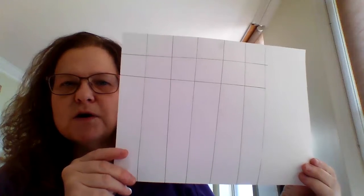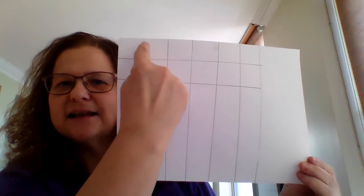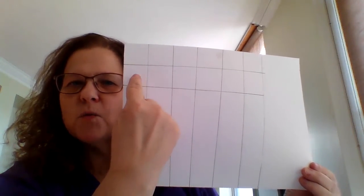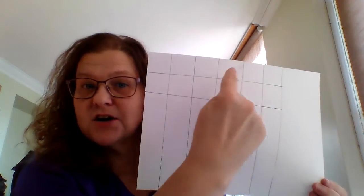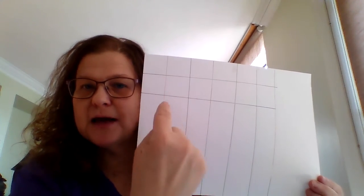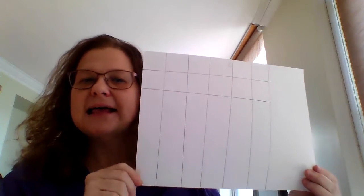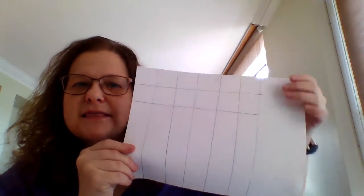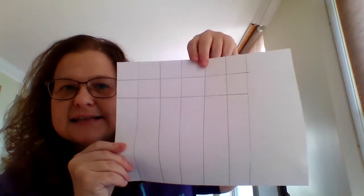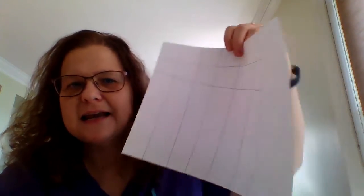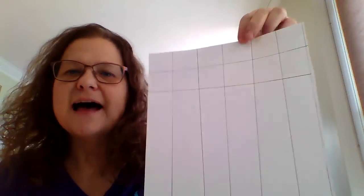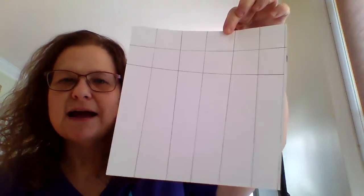Then we're going to make six lines coming down, so we have one, two, three, four, five, six columns. And going across, one, two, and keep going to have six rows. Now with any extra part on the edge, I'm just going to cut it off when I'm done so that my quilt will be the correct size. So don't worry about that part.